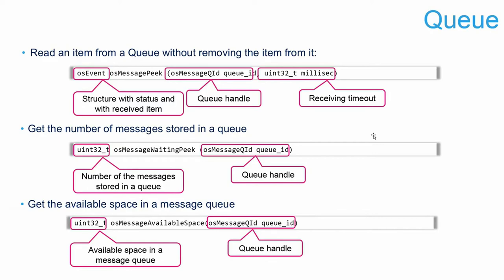If tasks waiting on the same queue have equal priority, the first one ready gets the data; if they have different priorities, the higher-priority one gets it. This is useful for a web server that spawns several handler threads: put new connection IDs into the queue, and available tasks pick them up, sharing the load. Each task can process different types of requests — web pages, dynamic scripts, images, JSON — all waiting on the same queue for new port numbers.